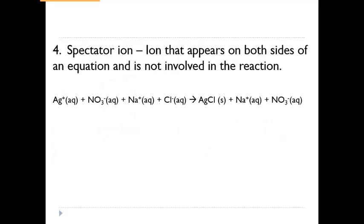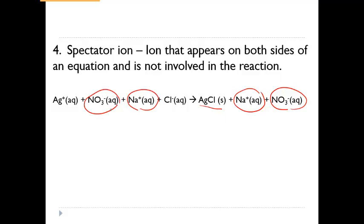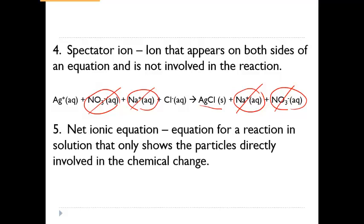We also have what we call spectator ions. Looking at this example, some ions appear on both the reactant side and the product side — they're not involved in the reaction and don't help form the precipitate, so we call them spectators. In this case, NO₃⁻ and Na⁺ are on both sides, so those are the spectators. When writing a net ionic equation, you cross those out and only write the ions that are actually part of creating the precipitate.